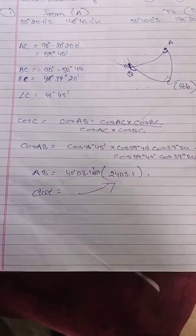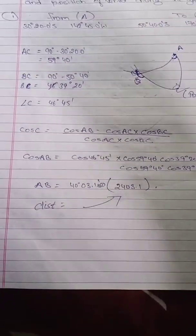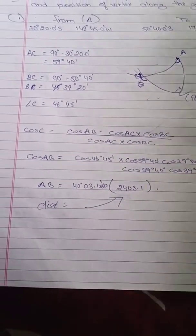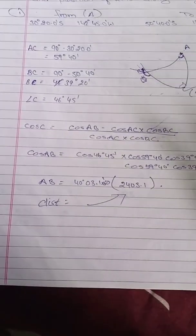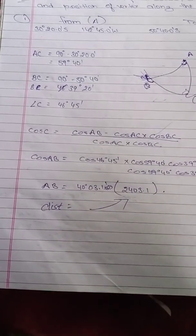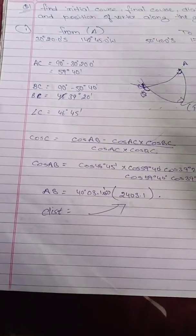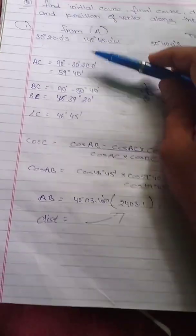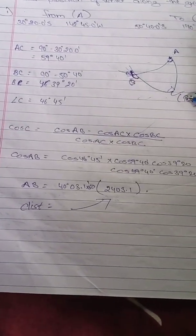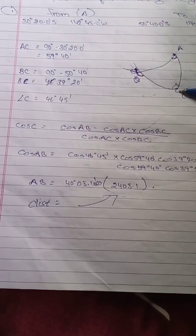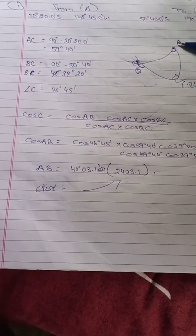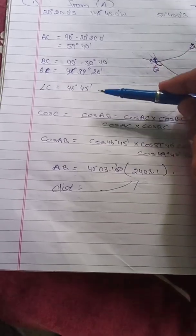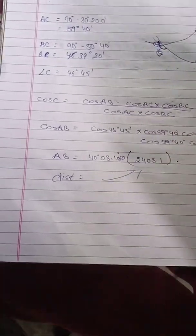Point C is the pole. The ABC formula from Subramaniam's book is easy, but when exam questions give distance and ask you to reverse-solve, it becomes difficult. So we use the simple cosine formula instead. First, find AC: from the equator to the pole is 90 degrees, and latitude A is 30 degrees, so AC = 90 − 30 = 60 degrees. Similarly, we find BC, and angle C is the difference of longitude.